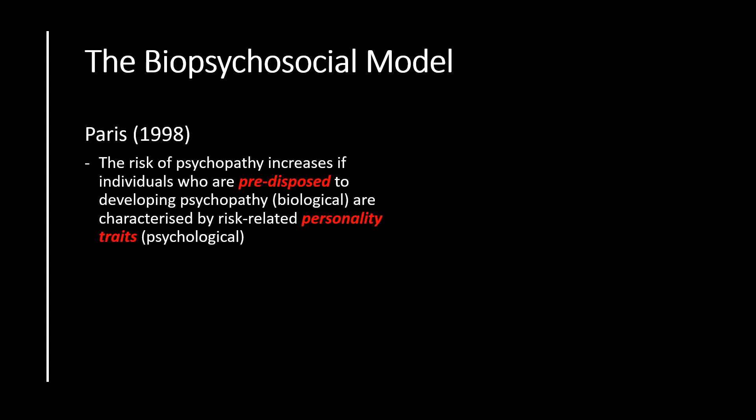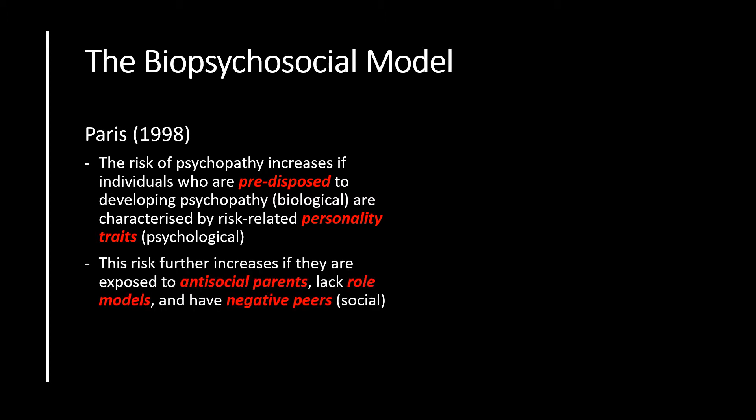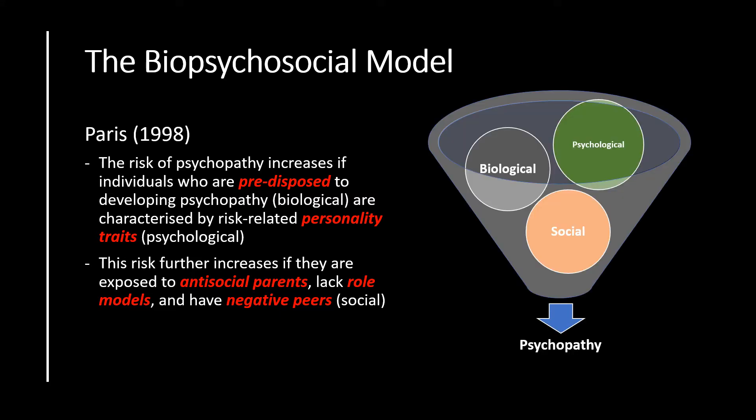Paris suggested that the risk of psychopathy increases if individuals who are predisposed to developing psychopathy through biological mechanisms are characterised by risk-related personality traits. Moreover, this risk further increases if they are exposed to antisocial parents, a lack of role models, and negative peers. Together, the development of psychopathy might result from an interplay of biological, psychological and social reasoning, and throughout this lecture we'll try to tease these apart and show how each aspect might interact to generate psychopathic development within an individual.